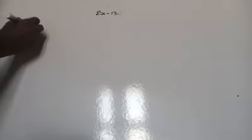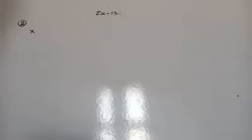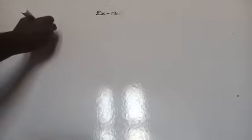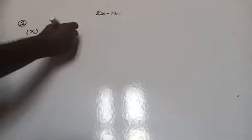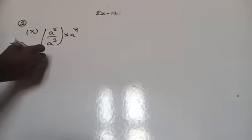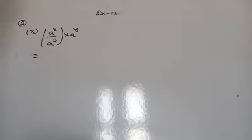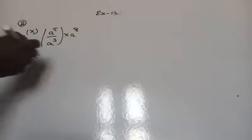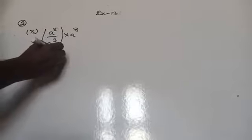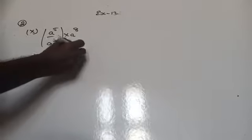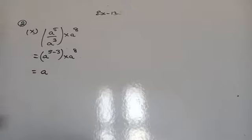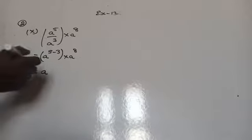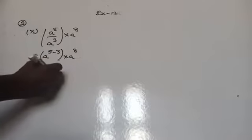Now look at the 10th subdivision in the second question: a power 5 divided by a power 3, into a power 8. It is in the form of a^m divided by a^n, so you can write a to the power m minus n. That means a to the power 5 minus 3, into a power 8. So a power 5 minus 3 is nothing but a to the power 2.